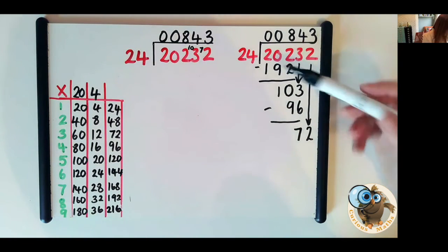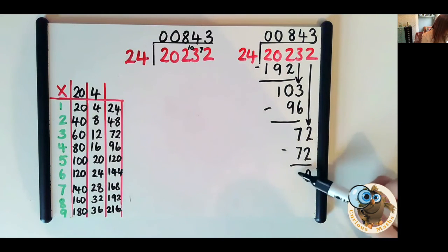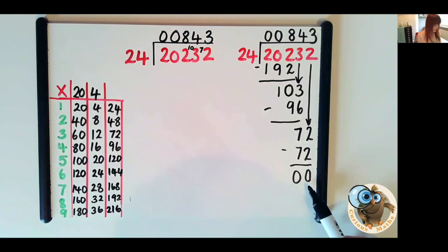So 3 24s is 72. We must remember to put it here because we need to be aiming for 0 as our answer if possible. And if we get 0 as our answer, we have a whole number answer. So 20,232 divided by 24 equals 843.